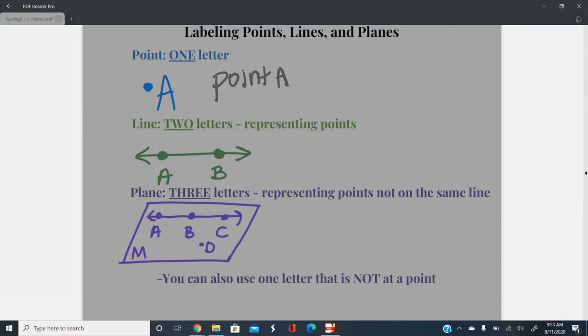For a line, you're going to use two letters, and those two letters represent points on the line. The order of the letters doesn't matter, it just has to be the two. So I could either write out the word line and then followed by the two letters, so that would be line AB.